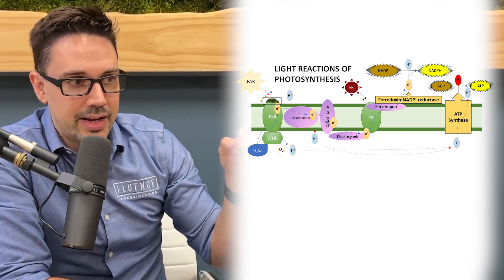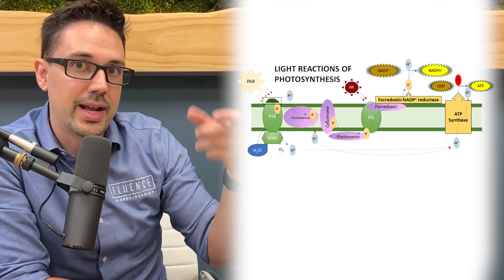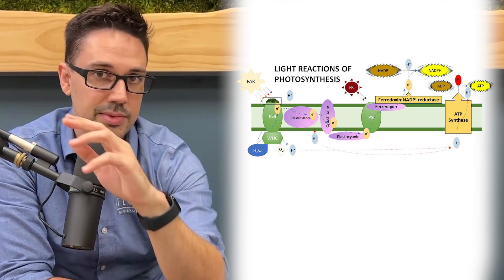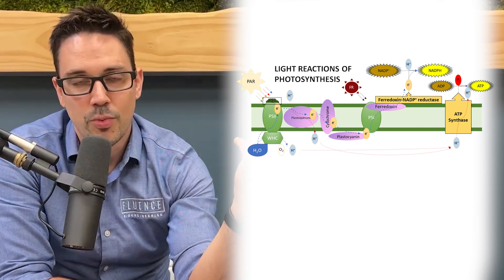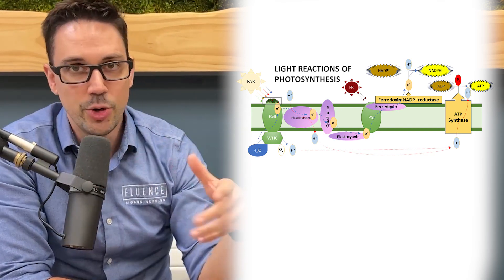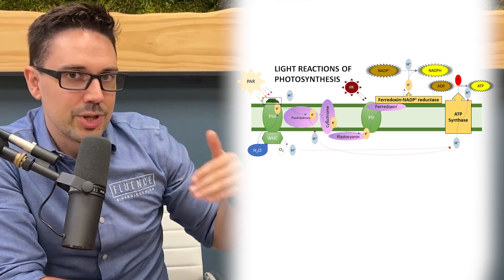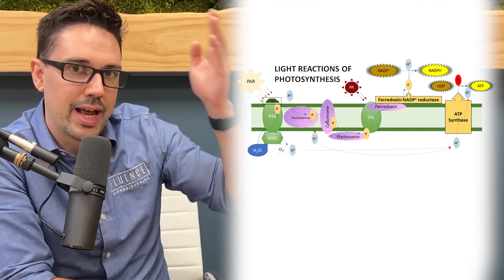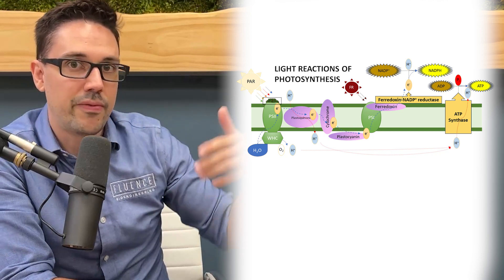Far-red can preferentially excite Photosystem I. It has its own antenna complex, just like Photosystem II. But Photosystem I is better at absorbing far-red and utilizing it. It essentially gives an energetic boost to that electron and helps it move through that step more efficiently.